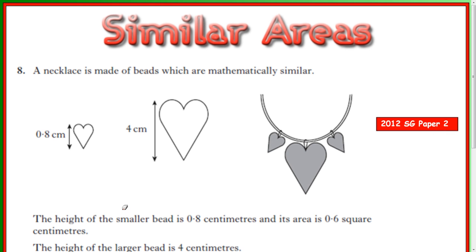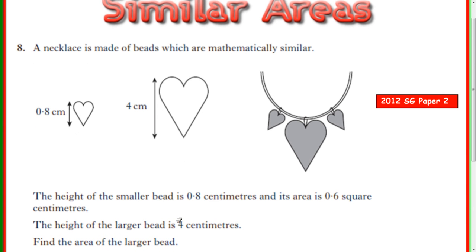Okay, finally let's look at an exam question involving this. It's from 2002, the standard grade paper, the credit paper. So a necklace is made of beads which are mathematically similar. It gives us some side lengths here or heights. So the height of the smaller bead is 0.8. It also tells you its area is 0.6 square centimeters. The height of the larger bead is 4 centimeters. Find the area of the larger bead.